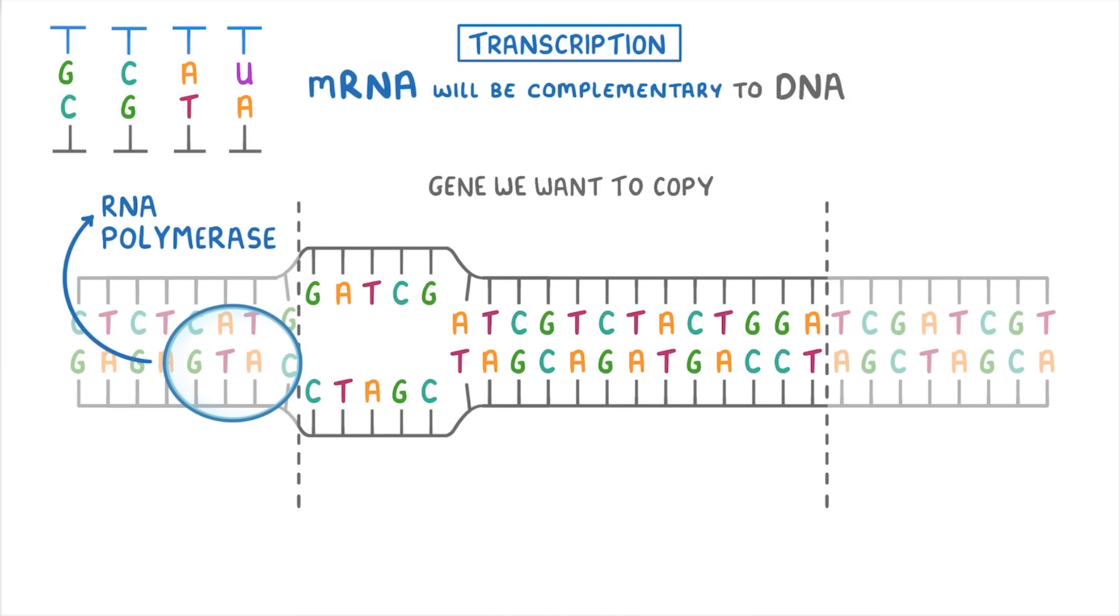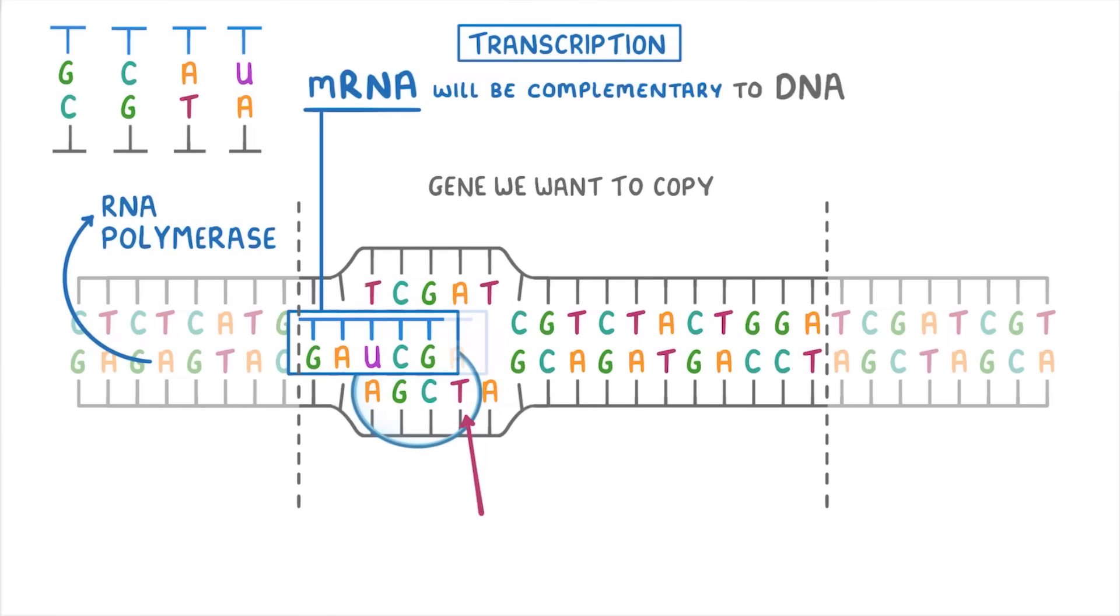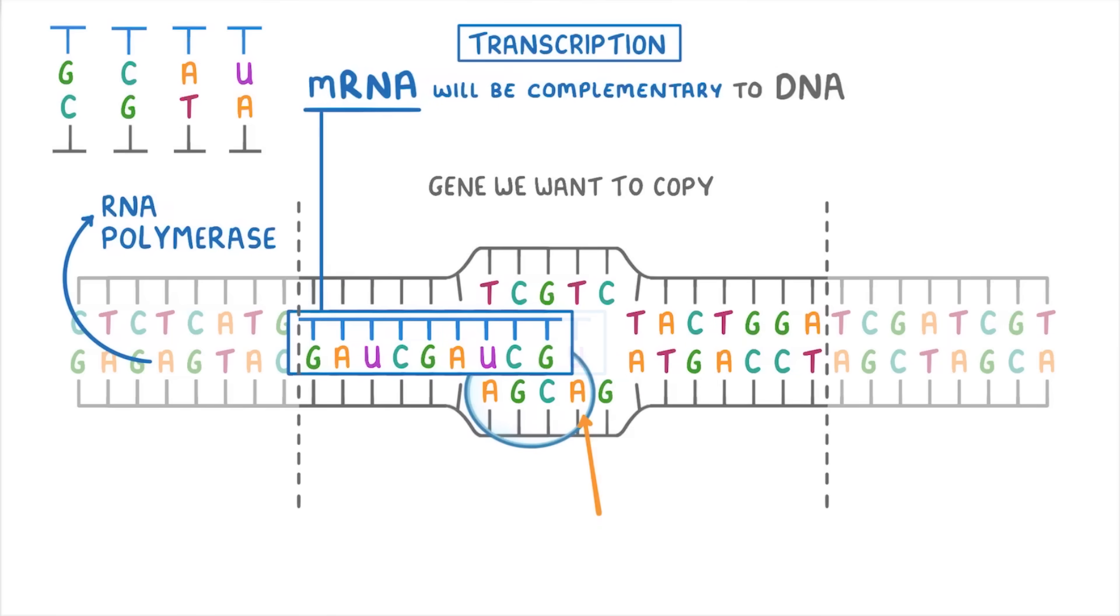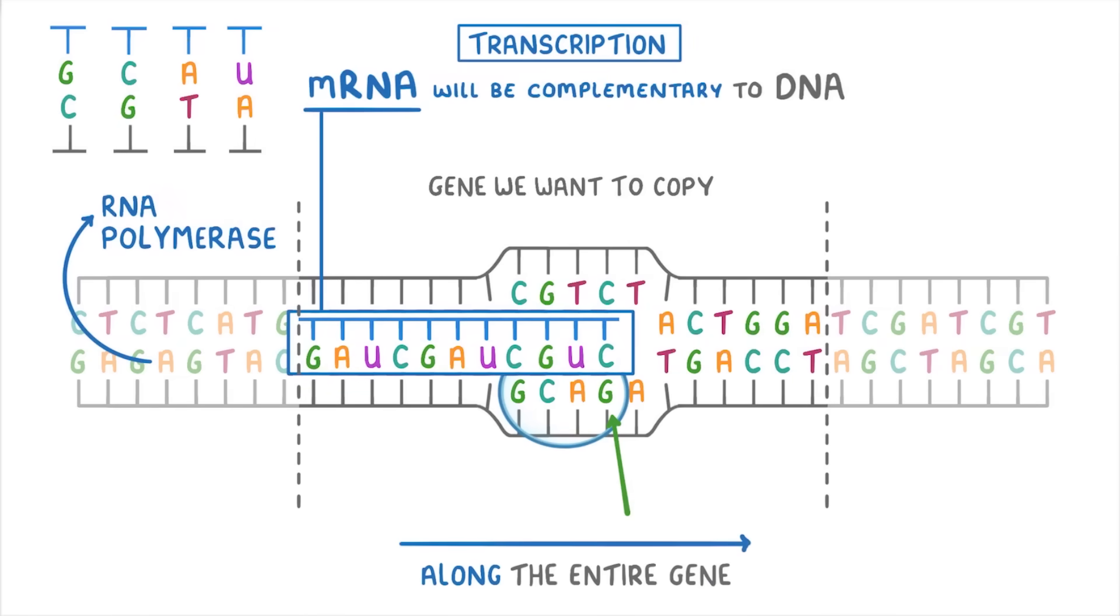So in our example here, the RNA polymerase will start with this C base, and so it will start the mRNA strand with a complementary G base. Next, it will read this T base, so it adds a complementary A to the mRNA. Then it will move on to this A base and add a complementary U. Then go to the G and add the complementary C, and so on. So the RNA polymerase is going to carry on doing this, building up the mRNA base by base as it moves along the entire gene.